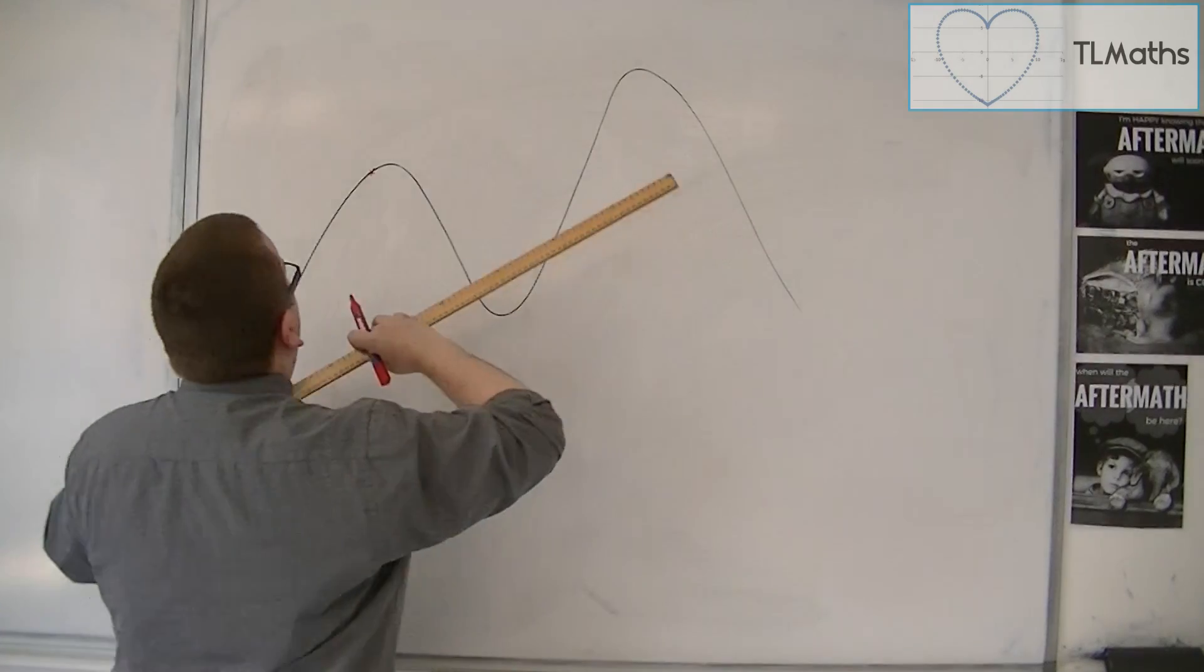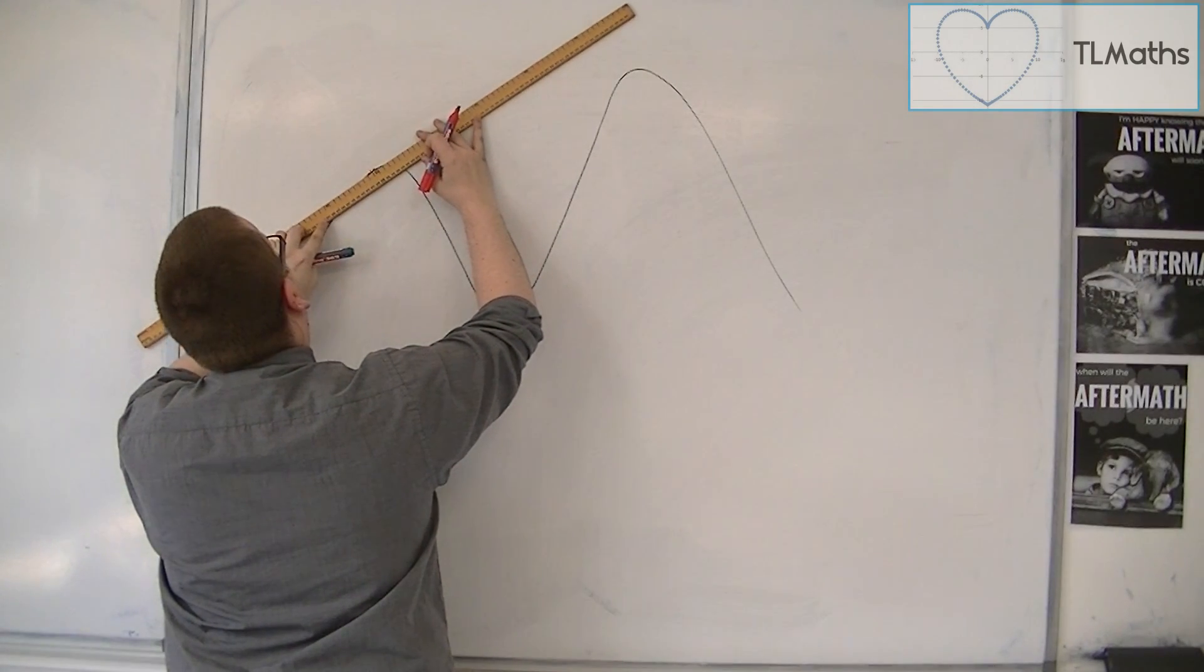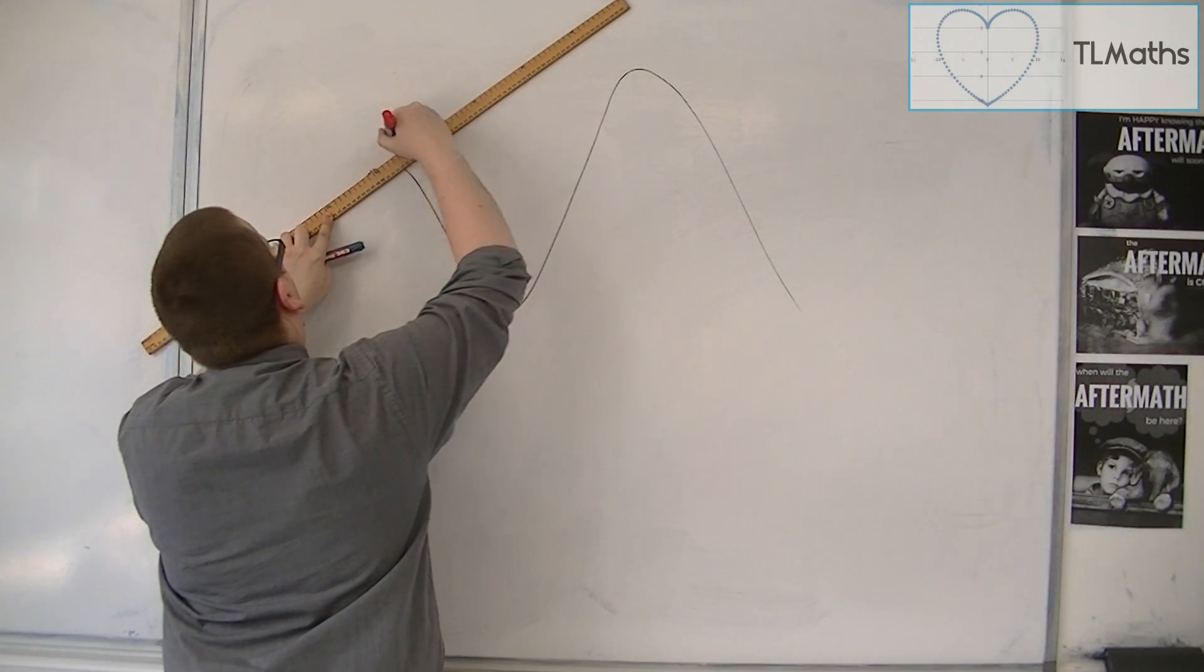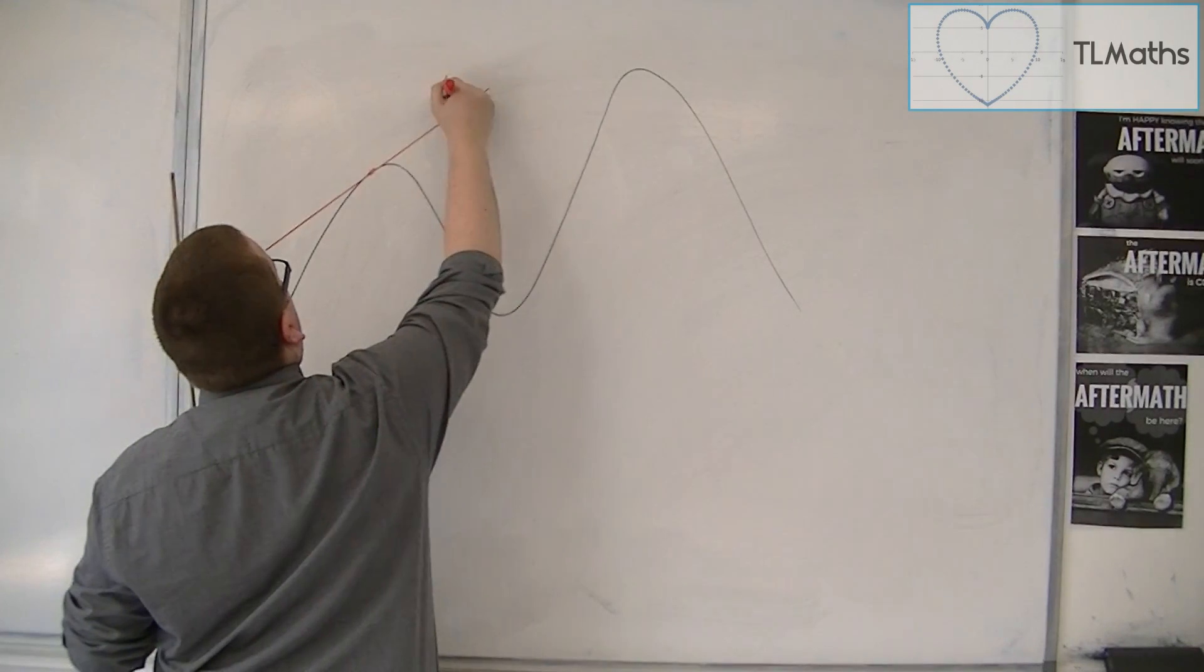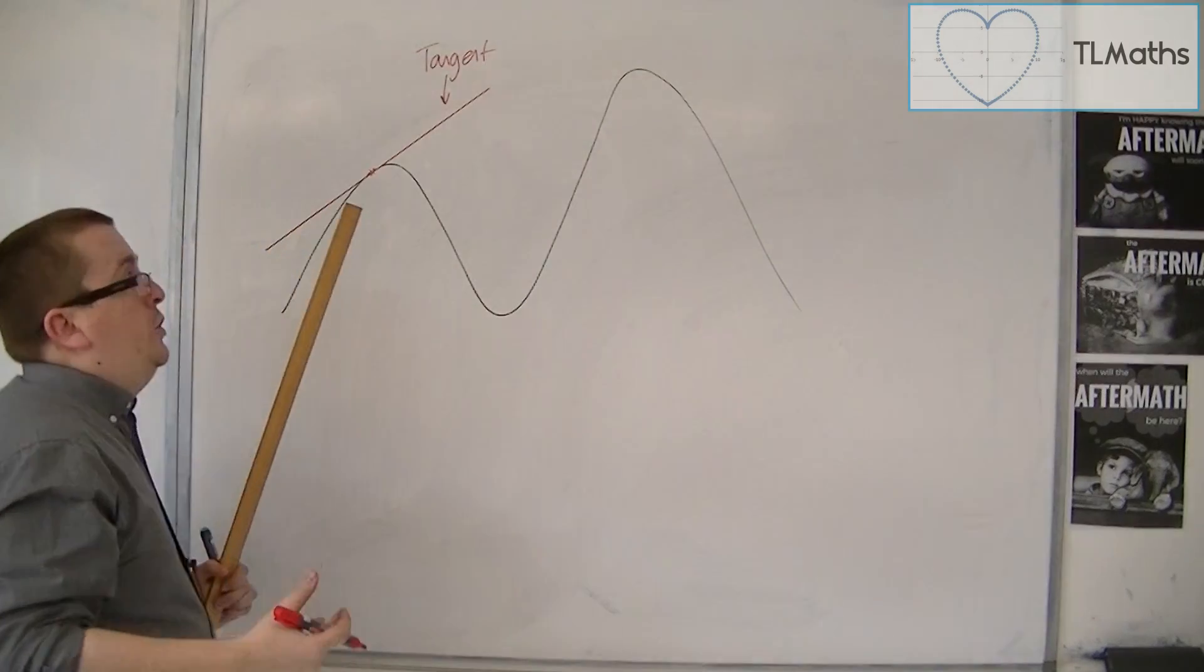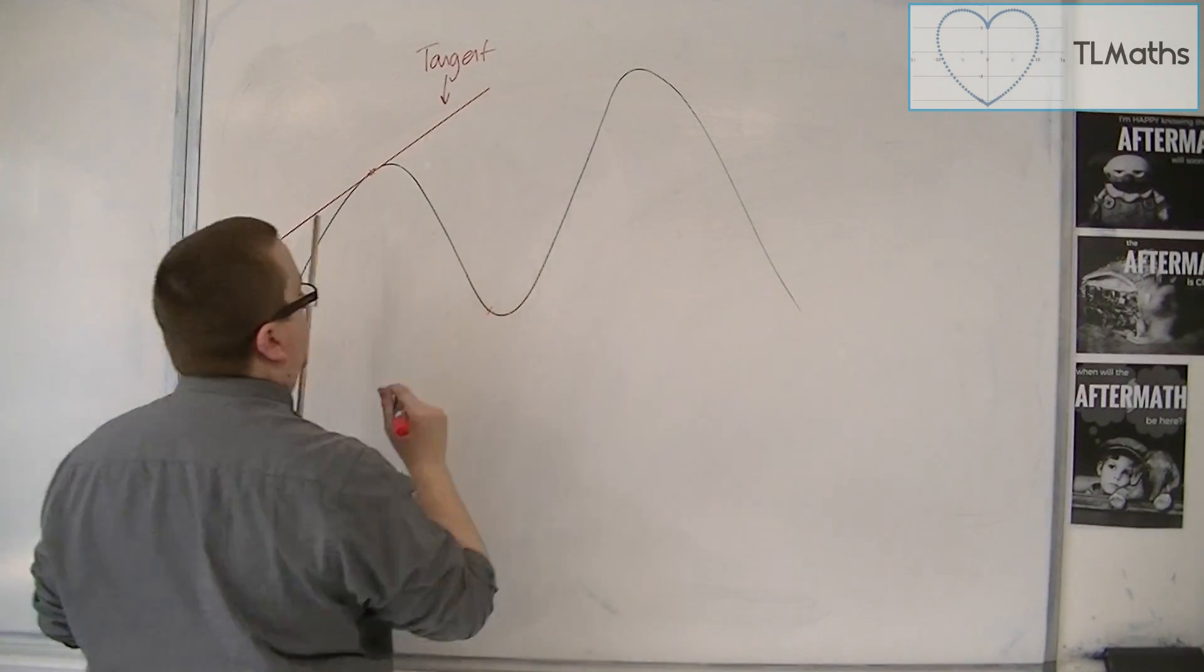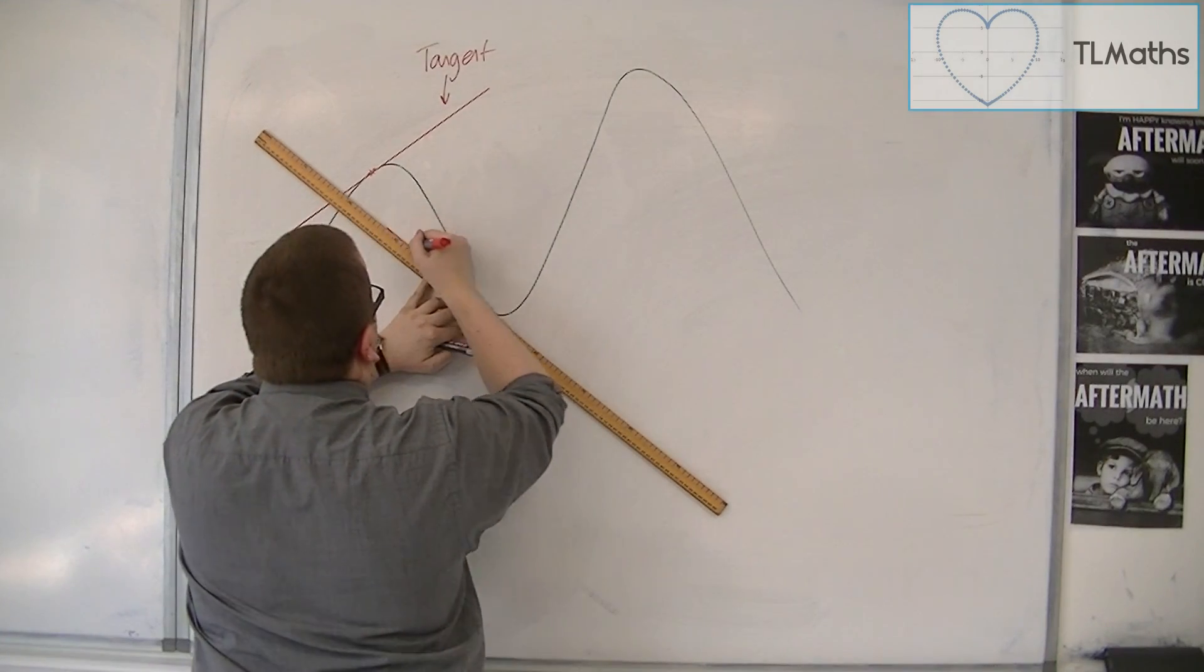So what we can say is that the tangent to the curve, just trying to get this fairly accurate, we could draw like that at that point. But we could draw a tangent at another point. So we could draw a tangent there, for example. So the tangent there would look like that.